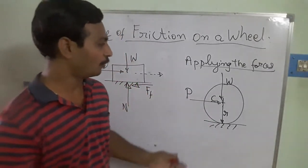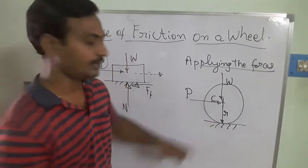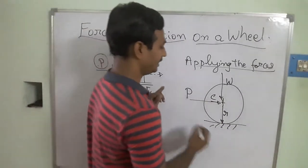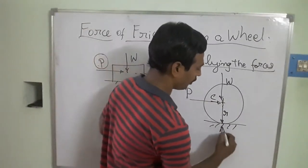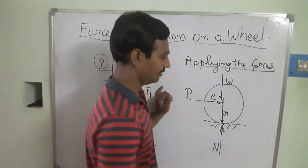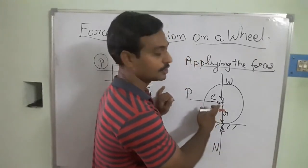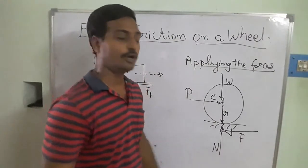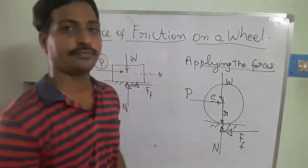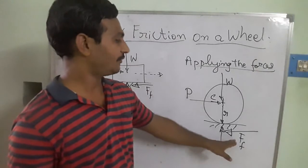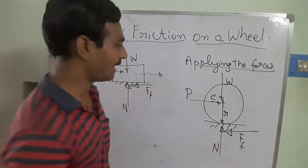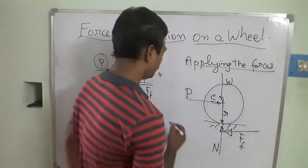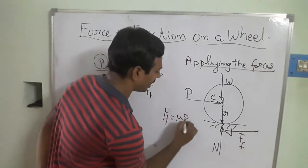Taking the center as C, we consider two forces. The reaction force N acts vertically upward, and P is the applied force. The friction force F opposes the motion of the body in the direction of applied force.